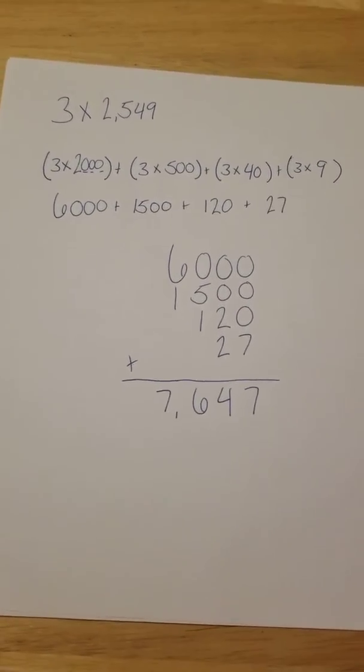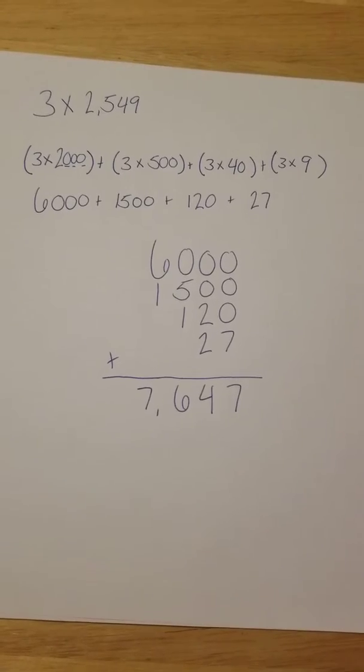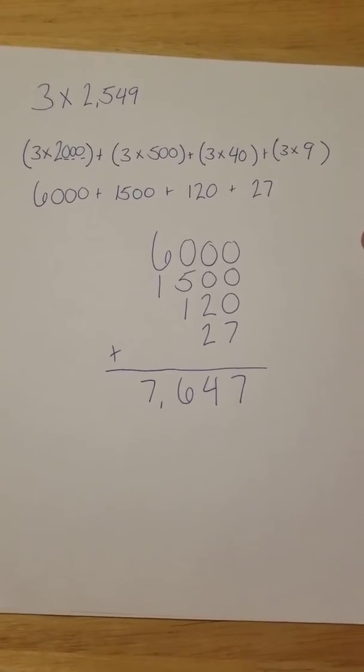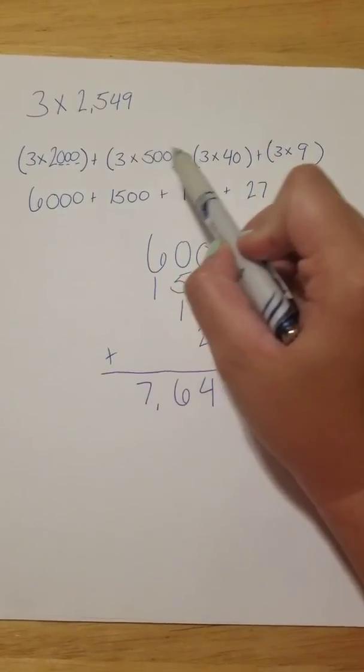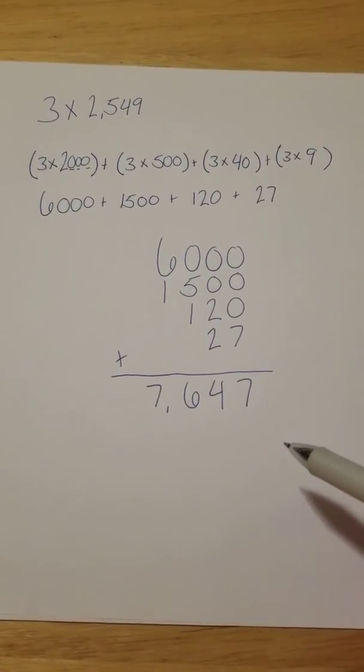Now you might be thinking to yourself, this distributive property looks a lot like the area model. Well, it is a lot like the area model. Because when we use the area model, we break it apart into the place values. It's just going to be sideways.